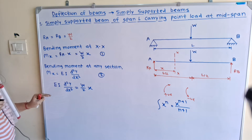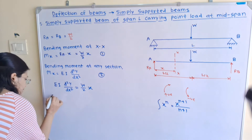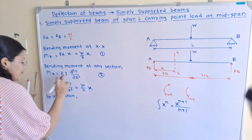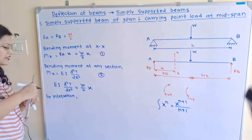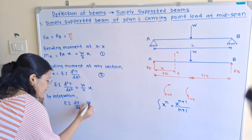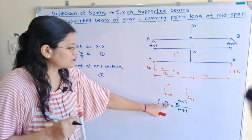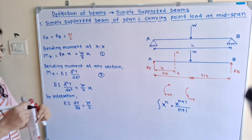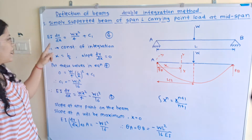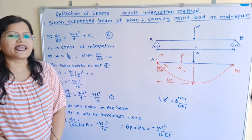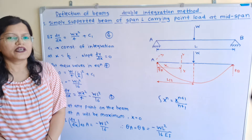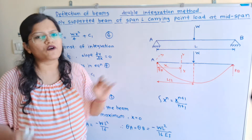Integrating both sides: on the left-hand side we get EI dy/dx. On the right-hand side, W/2 is constant and x^1 integrates to x²/2. Simplifying, we get EI dy/dx = Wx²/4 + C1. This is equation number 4, where C1 is the constant of integration.